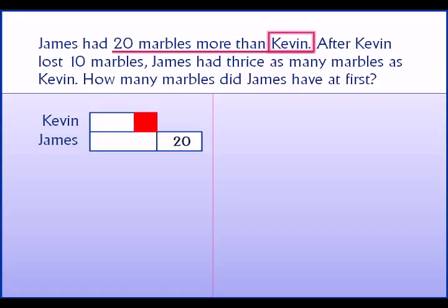Now, what happens after Kevin lost 10 marbles? Kevin is losing 10 marbles. The equivalent area we mark for James should be equal to 10 marbles because the size is the same. Kevin has lost his 10 marbles, so now James has 30 more marbles than Kevin.